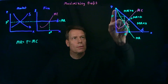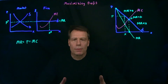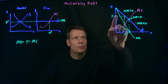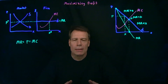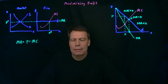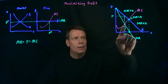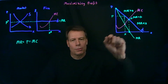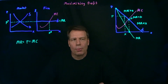For the first unit, the firm gets this marginal revenue and incurs this marginal cost, so it makes a profit on that first unit. For the second unit, the additional revenue is larger than the additional cost, so it makes additional profit from the second unit. And that's going to be true all the way until marginal cost intersects marginal revenue. If it were to produce any additional units, the marginal cost would exceed the marginal revenue, so it would take away from its profit.